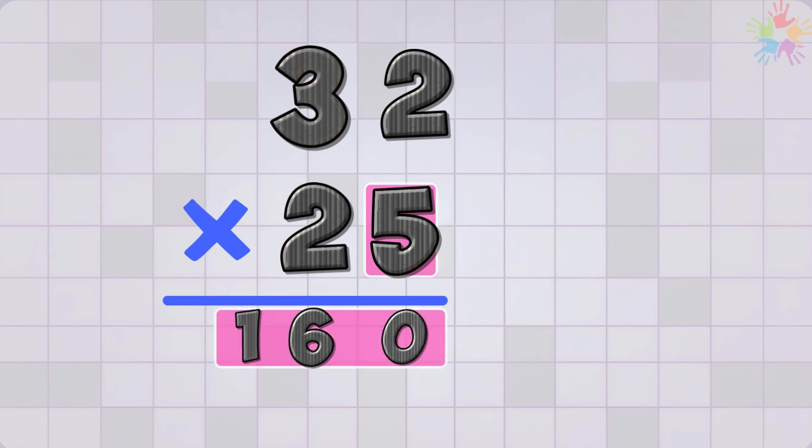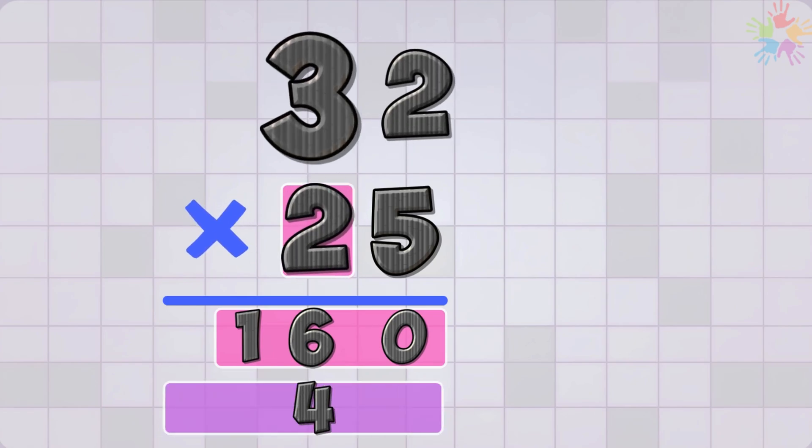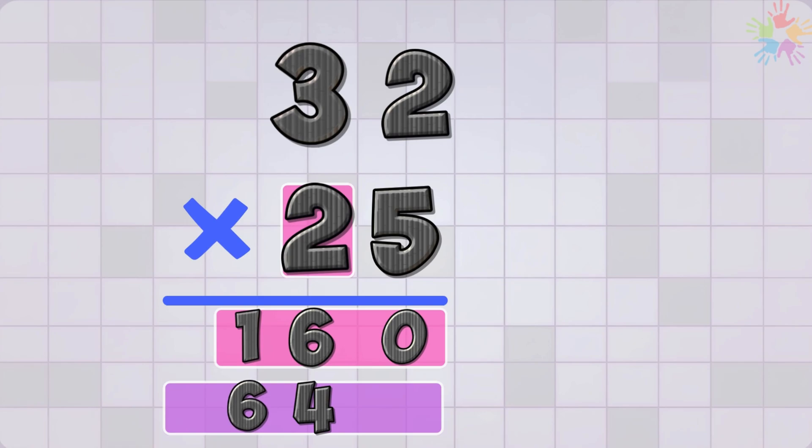Next, we move to the digit in the tens place, which is 2. Now multiply. 2 times 2 equals 4. Write it. Then 2 times 3 equals 6. No carrying needed here. So our second row becomes 64. Now we add both rows.